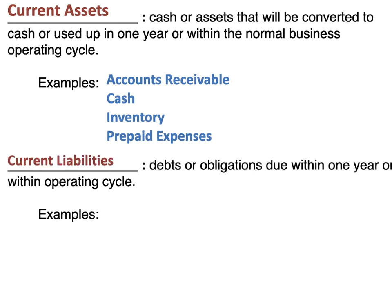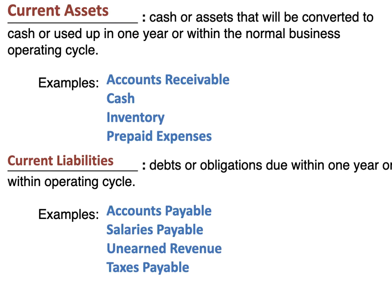Current liabilities would be debts or obligations that are due within one year or within the operating cycle. Some examples of current liabilities would be accounts payable, salaries payable, and unearned revenue. Remember, unearned revenue is not a revenue yet — we've gotten cash in advance of doing anything, so it's still unearned, meaning we owe someone something. Also taxes payable would be an example of a current liability.